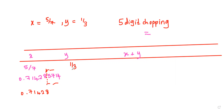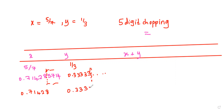Likewise, if you give the value of 1/3 and press the equal button, on a normal calculator you are going to get 0.3333... repeating. But here it's going to chop it down after the fifth digit, so what we are going to see in that calculator is 0.33333.